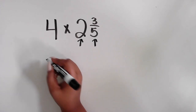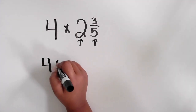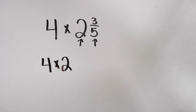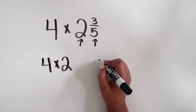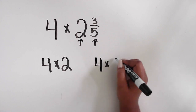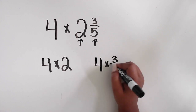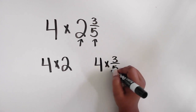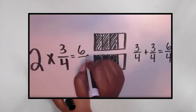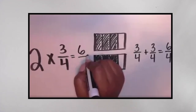First, we can multiply 4 times the two wholes, and that is a simple math fact for most students. Then we're going to multiply 4 times the fraction 3 fifths. And guess what? Your students will know how to do that as well, because in the last video we talked about how to multiply a fraction by a whole number.